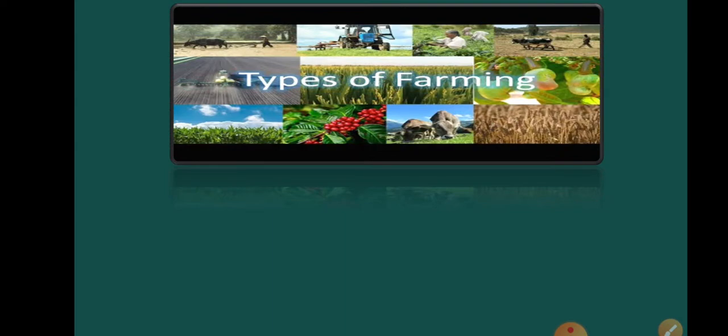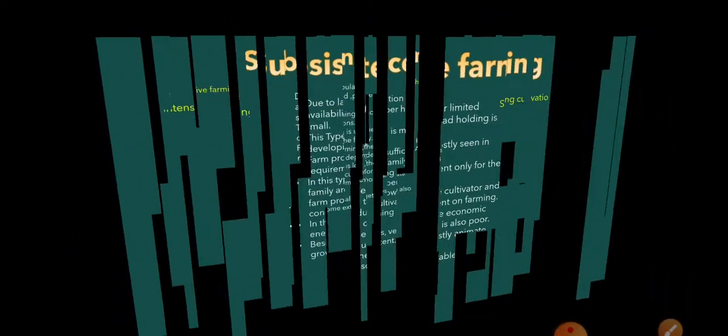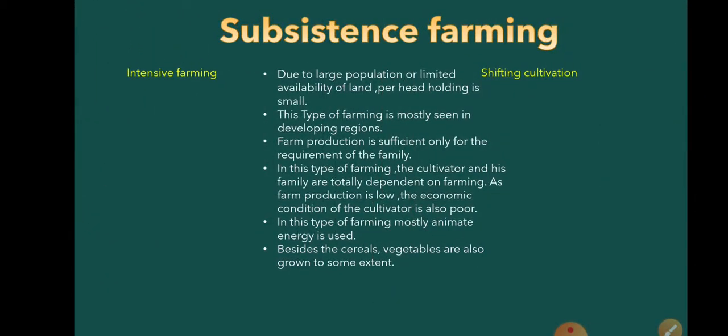Now we will see the types of farming. Here you can see the flowchart, and with this we will learn what the types of farming are. There are two main types of farming. The first one we are going to learn is subsistence farming, which is an old traditional type of farming. Within subsistence farming, there are two types: intensive farming and shifting cultivation.